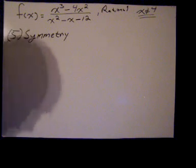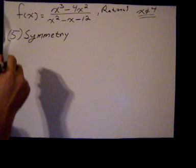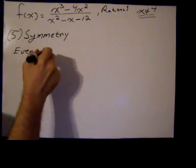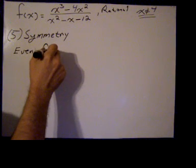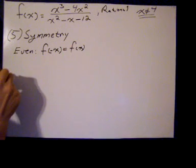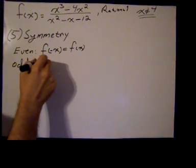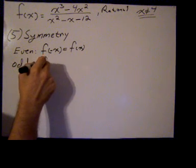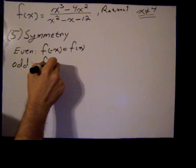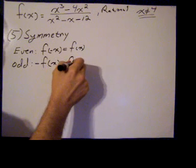So hopefully everyone knows these. If it has even symmetry, then f of negative x will equal f of x. And if it has odd symmetry, then that means that negative f of x equals f of negative x. But I kind of like this a little better.